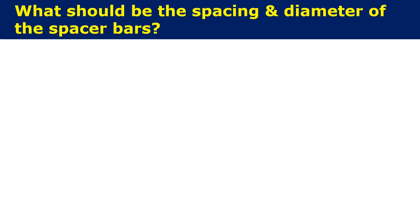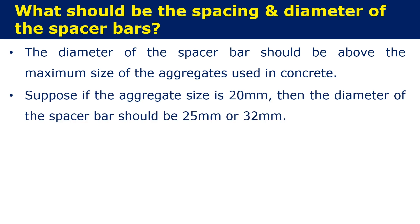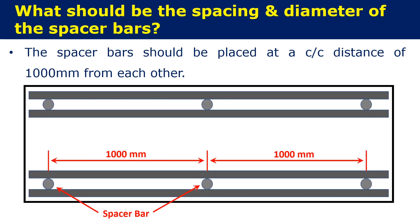Now let us see what should be the spacing and diameter of the spacer bars. The diameter of the spacer bars should always be above the maximum size of the aggregate used in the concrete. Suppose if the aggregate size is 20 mm, then the diameter of the spacer bar should be 25 mm or 32 mm. The spacer bar should be placed at a center-to-center distance of 1000 mm from each other.